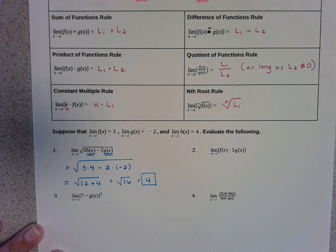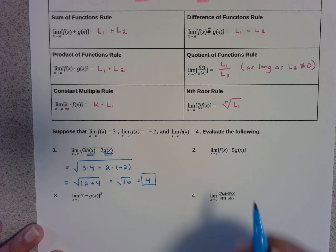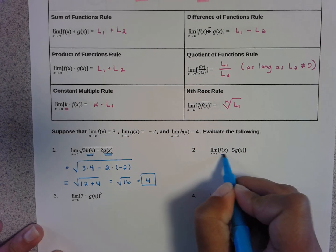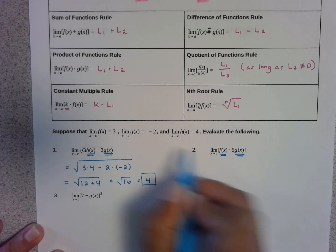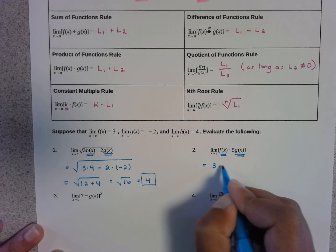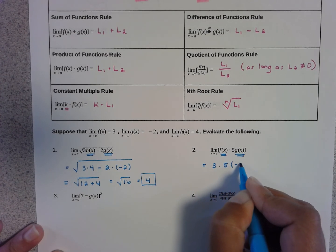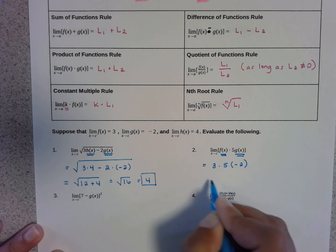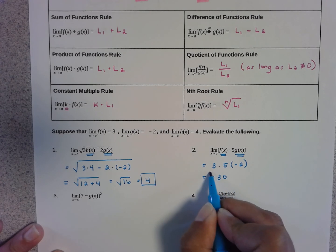For problem number 2, we're again just going to substitute the values from the instructions. So instead of f(x) I'm going to put 3, and instead of g(x) I'm going to put negative 2. So I would have 3 times 5 times negative 2, which gives me negative 30 as my final answer.